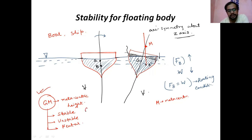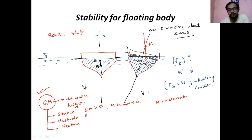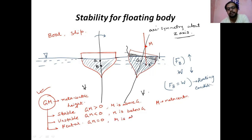So metacentric height is the only deciding factor. If GM is greater than 0, that means M is above G — that is a stable condition. If GM is less than 0, that means M is below G — unstable. If GM is equal to 0, that means the metacenter and center of gravity are the same point, M is at G — so it is a neutral equilibrium. That is the condition of stability for a floating body.